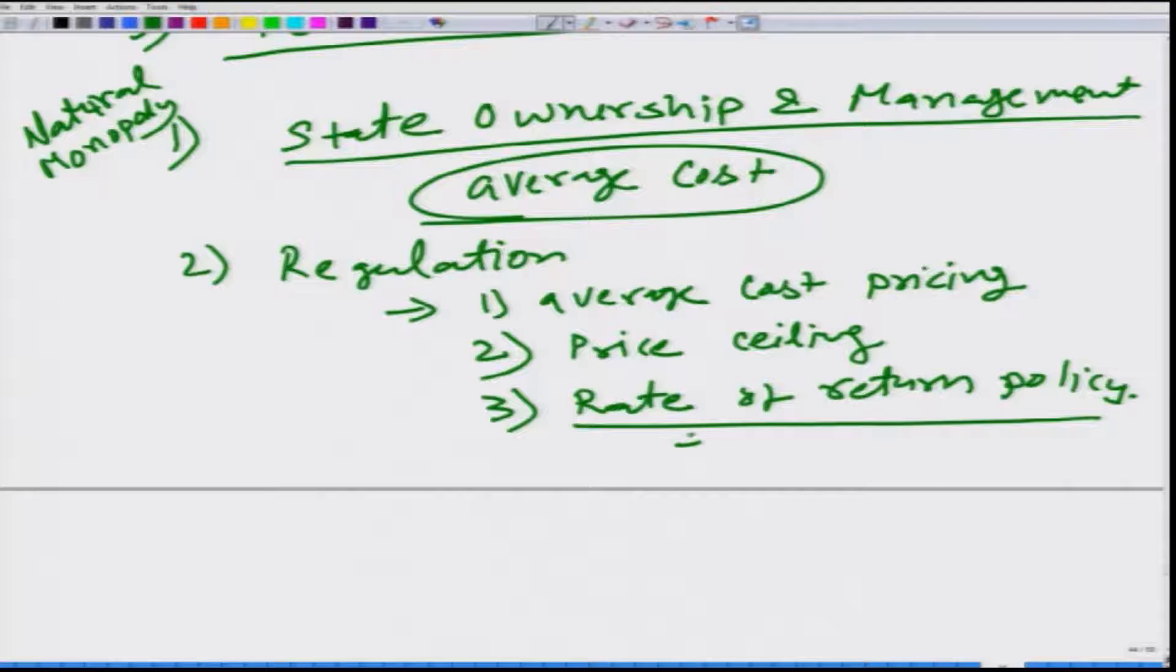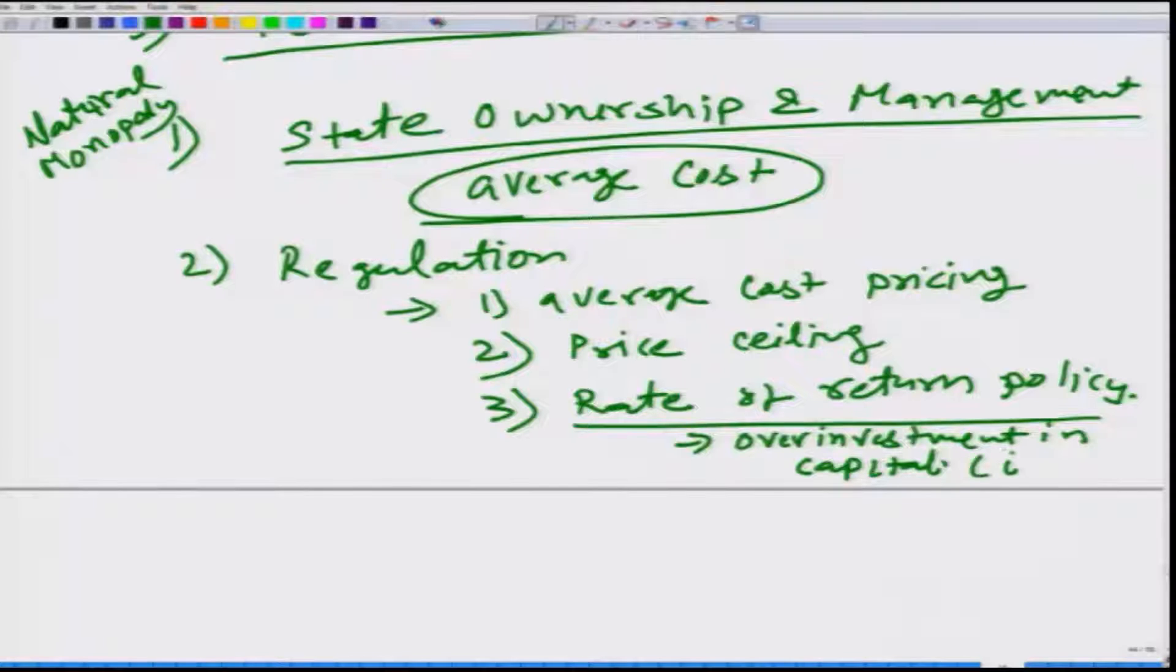The problem with this is that typically we see over investment in capital. The reason is very simple: because the Monopoly's return depends on the amount of capital, they are going to earn the normal interest rate which is prevailing in the market plus a markup. So if they over invest, they will have higher markup, which gives them incentive to do over investment.